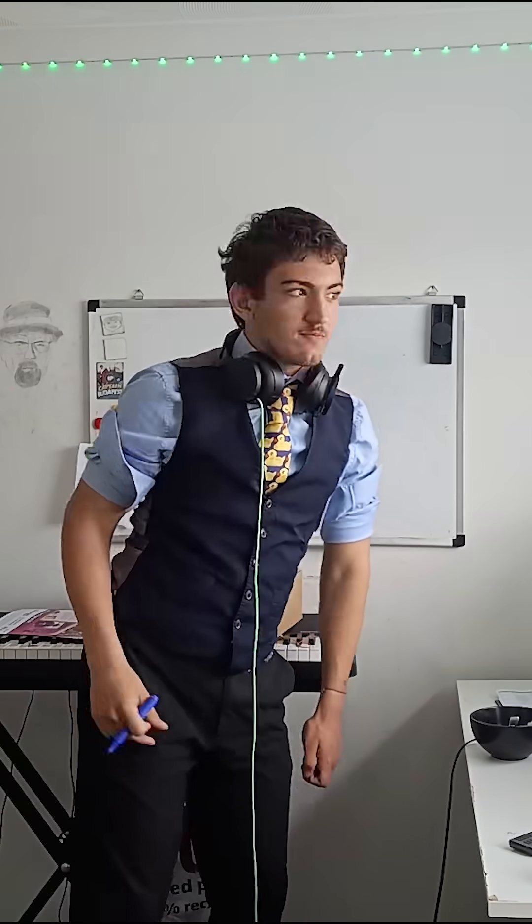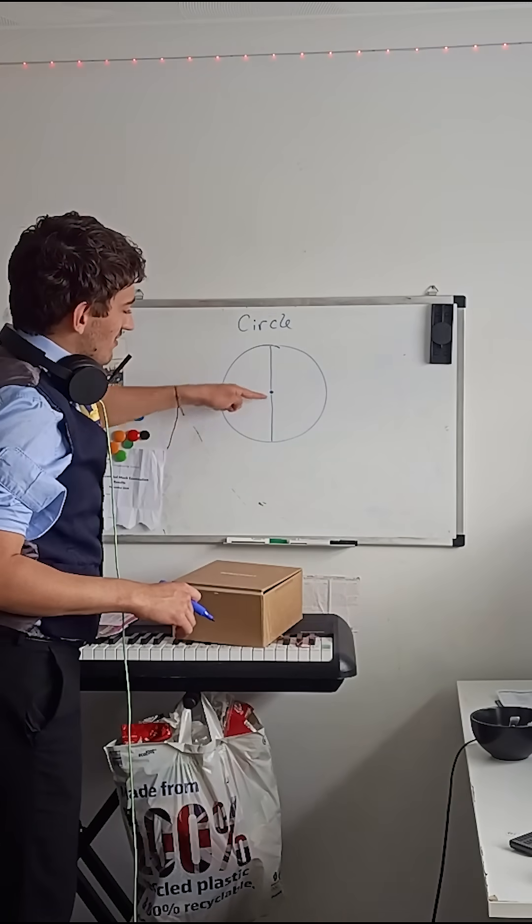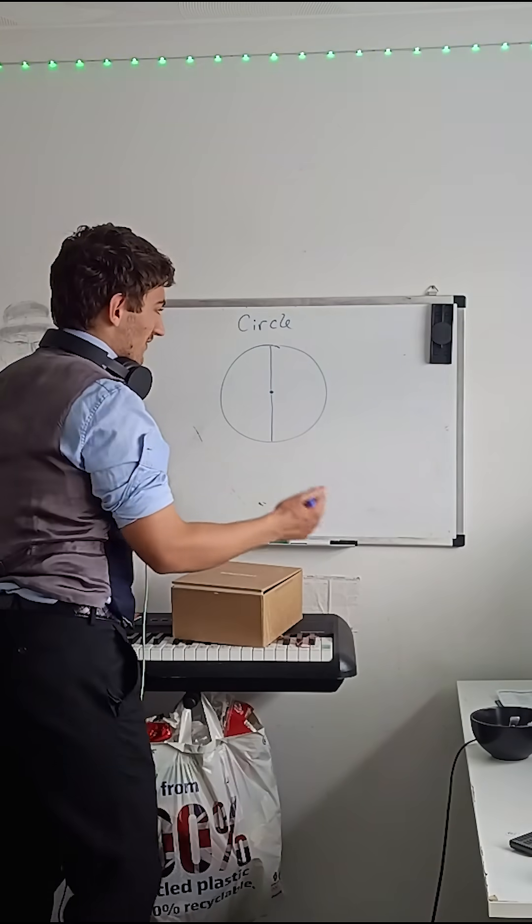One, the diameter, and two, the radius. The diameter is a line going from one side through the center to the other side of the circle. The radius is just half of that.